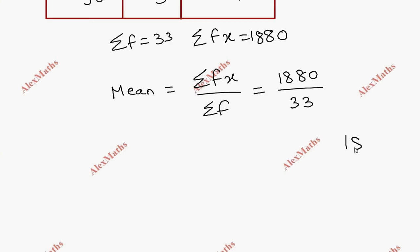33 divides into 1880. 5 times 3 is 15, 16, 165. Balance is 230, 230 minus 198.